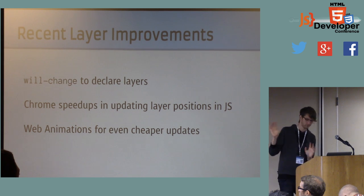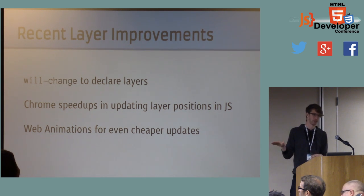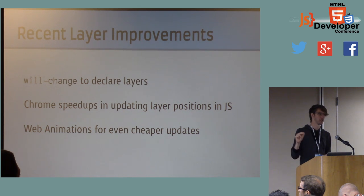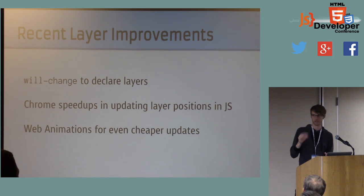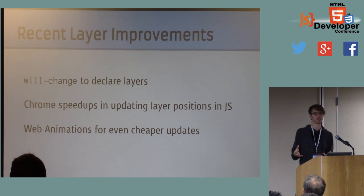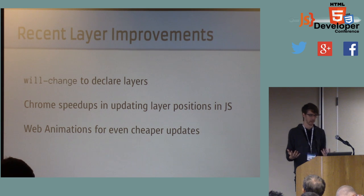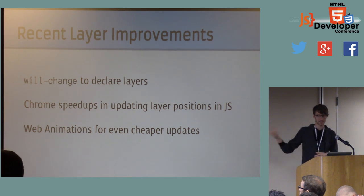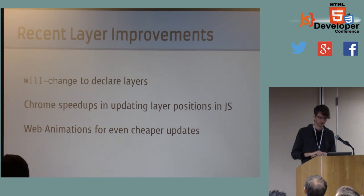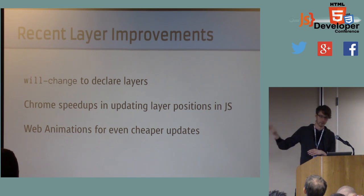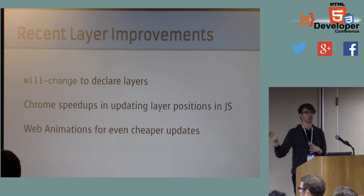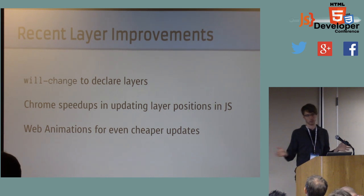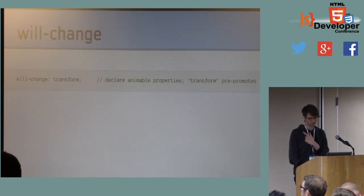I want to brag briefly about some speedups we've made to updating layer positions from JavaScript. There are these composited-only CSS properties like transform and opacity, but if you're setting these from JavaScript with inline style, you still pay a style recalculation cost. That style recalculation cost can be expensive because the string you set needs to get parsed and applied to the DOM. That's gotten a lot cheaper recently — check out recent versions of Chrome. Coming up next, Web Animations is going to let this be even cheaper still, because you can set up the animation timeline ahead of time and then just scrub the timeline, without doing style recalculation at all.